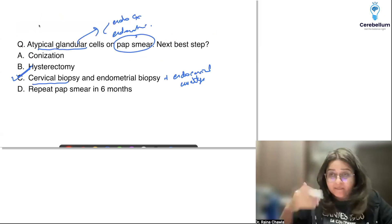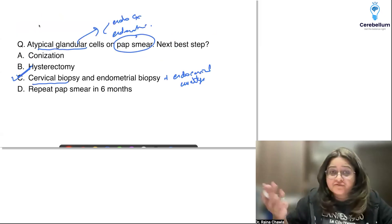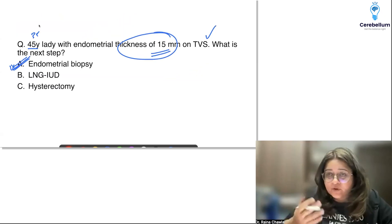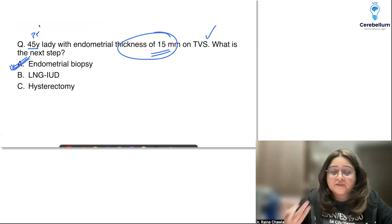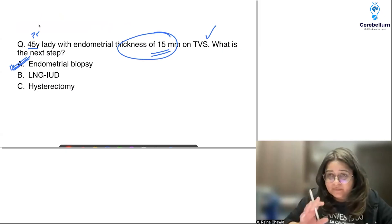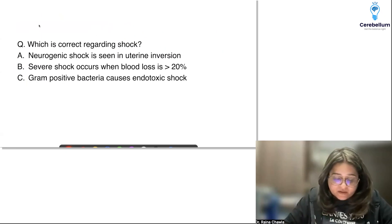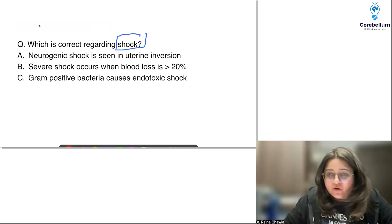We should repeat a pap after we know what the biopsy says — the biopsy might come back normal, and then you repeat the pap. But first, we always need to biopsy an abnormal pap smear.